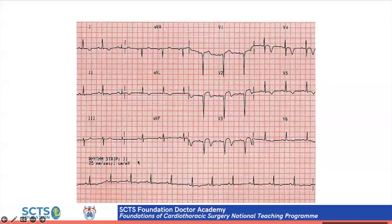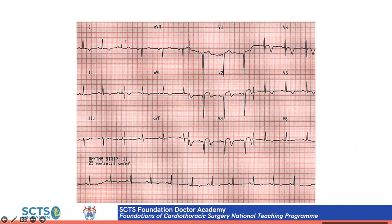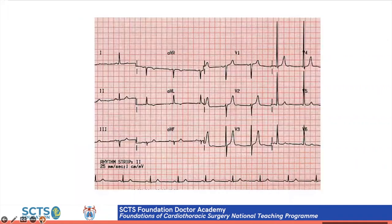An ECG is shown to the audience. A participant identifies T-wave inversion in V4 and aVF, and ST elevation in V3, diagnosing an anterior STEMI. ST elevation is confirmed in V2 and V3 with T-wave inversion, consistent with an anterior STEMI affecting the anterior territory.